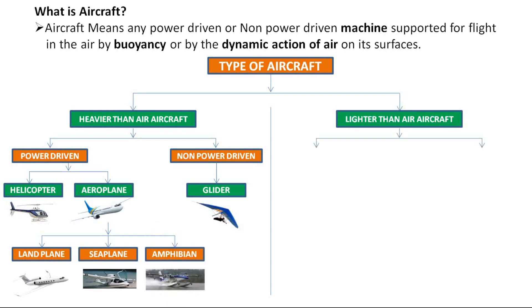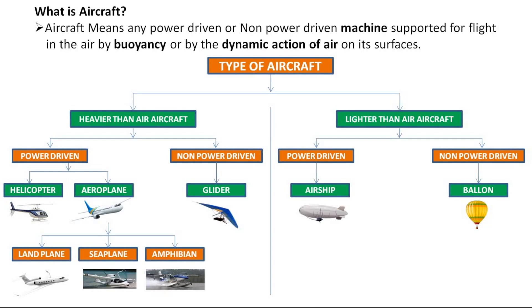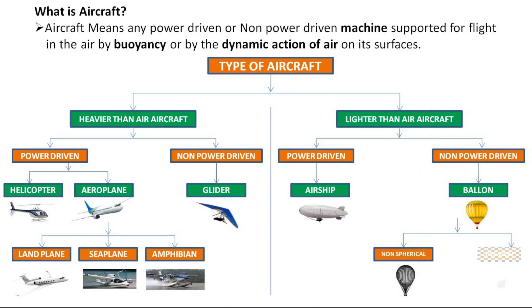Lighter-than-air aircraft is mainly divided into two types: power-driven aircraft and non-power-driven aircraft. Power-driven aircraft includes only airship, and non-power-driven aircraft includes only balloon. Balloon is again divided into two types: non-spherical balloon and spherical balloon.